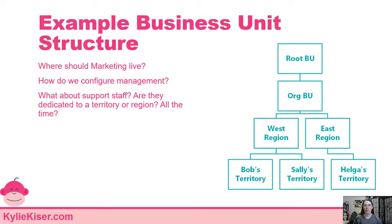Also think about assistants. Let's say Bob has an assistant who just works with Bob — easy, he can live in Bob's business unit. Maybe he works with all users in the west, then he lives in the west region with deep parent-child business unit access. But what if this assistant needs to support Bob and sometimes Helga when Helga's on vacation? Do we want assistants to have access to everybody, or how can we better share access between business units? These are more difficult questions, so think about them as you plan your structure. There are multiple solutions, but plan for them so you can make informed decisions.